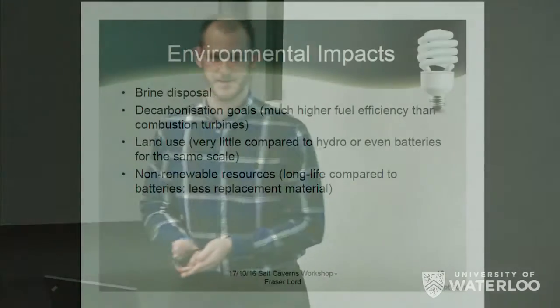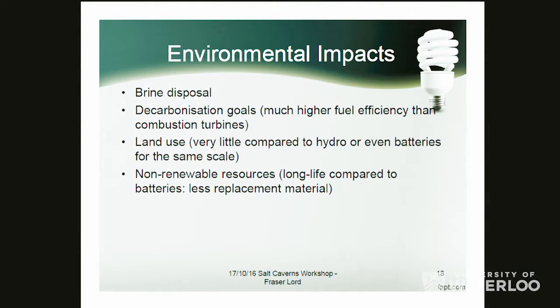The major environmental barrier to CAES is often viewed as brine disposal. To make a one-million-cubic-meter cavern, you typically produce seven to eight million cubic meters of brine — you've got to do something with all that. There's no easy answer, but options include deep well injection or use for de-icing roads. If you're lucky enough to be close to the ocean, you can discharge it there, but most sites aren't close enough.